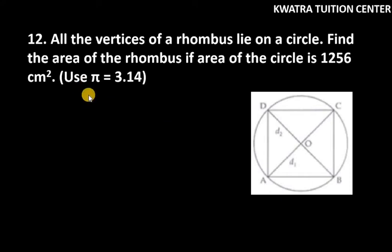Hello everyone, let's start with question number 12. It says, all the vertices of a rhombus lie on a circle. Find the area of the rhombus if the area of the circle is 1,256 cm².